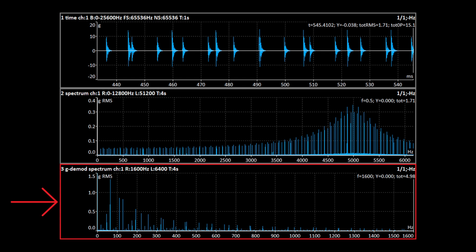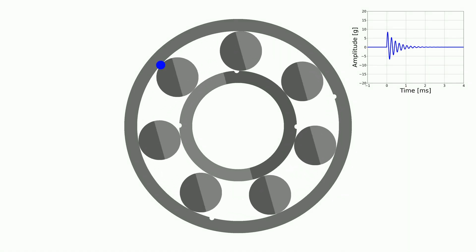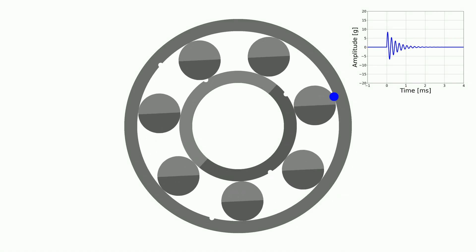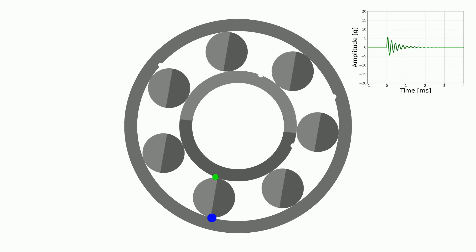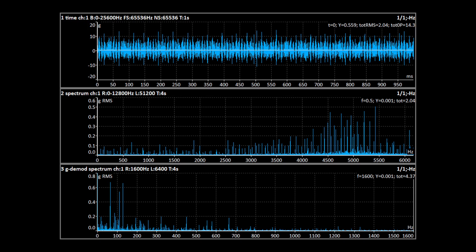The demodulated spectrum shows both frequencies and harmonics of the BPFO and the BPFI. We would see something similar if the number of faults on both races was greater. It does not matter how many faults are there. They repeat. Therefore, we see the important frequencies in the demodulated spectrum.